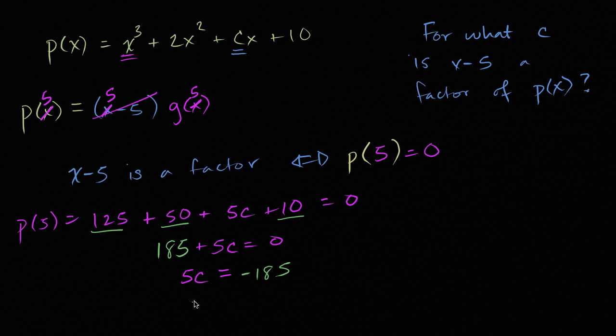Or c is equal to negative 185 over five, which is going to be, let's see, five goes into 180, it goes into five, it's going to be 30.